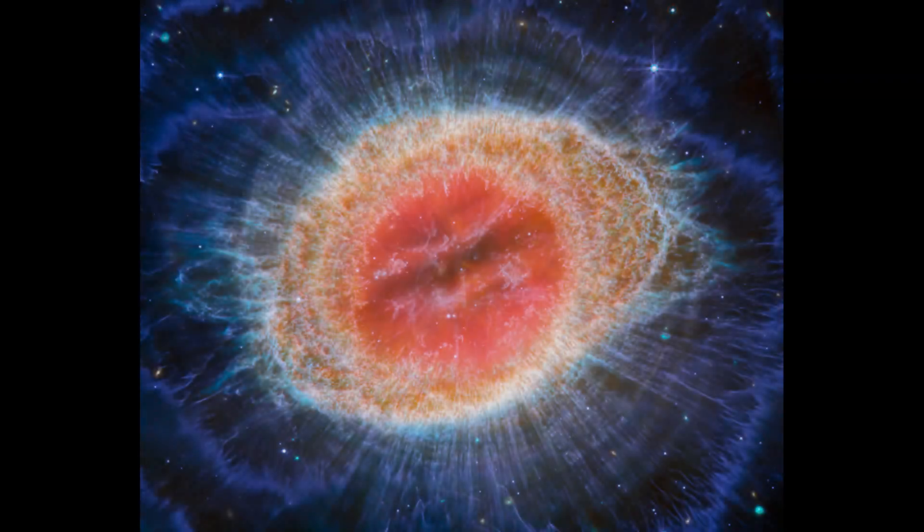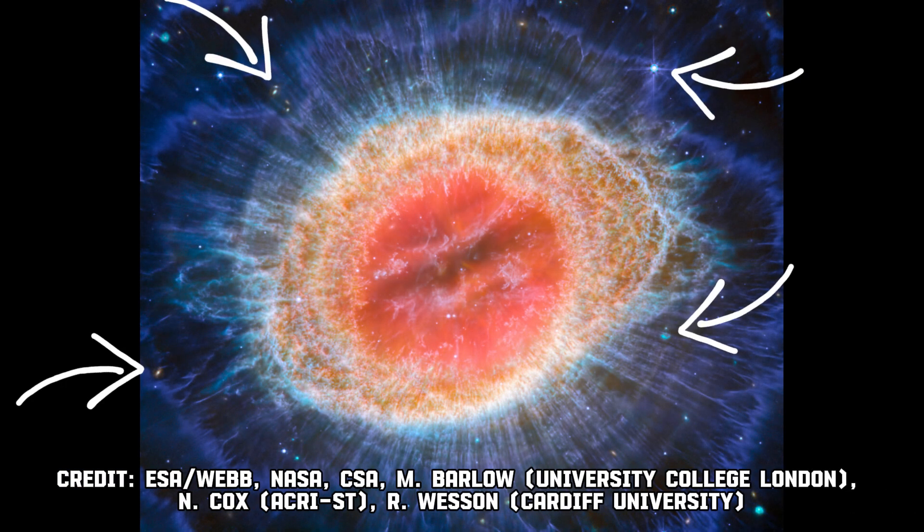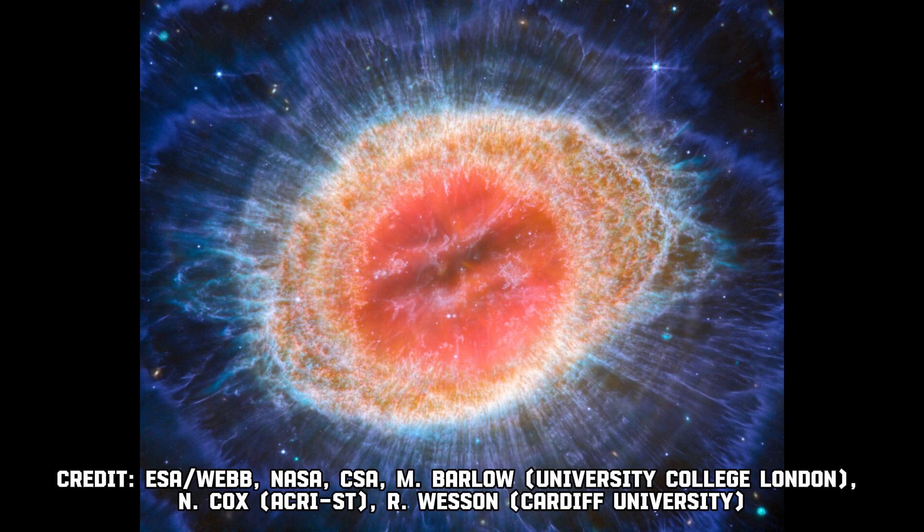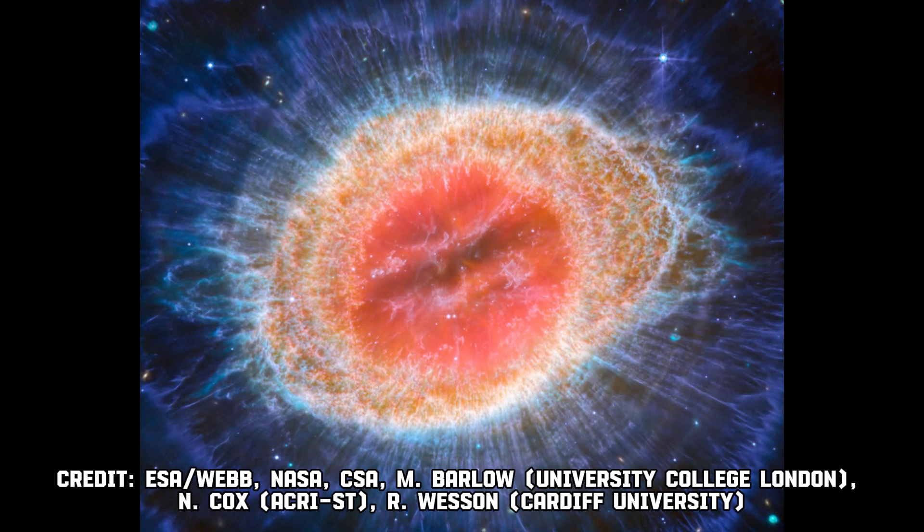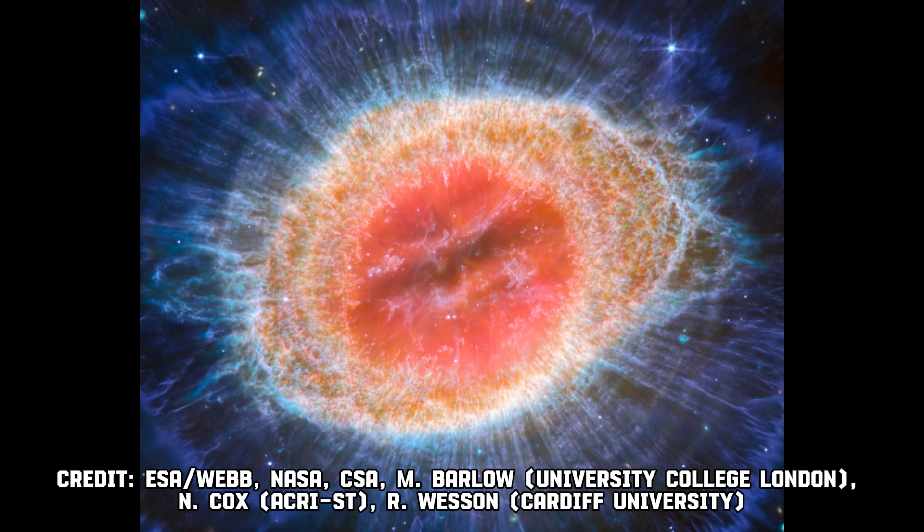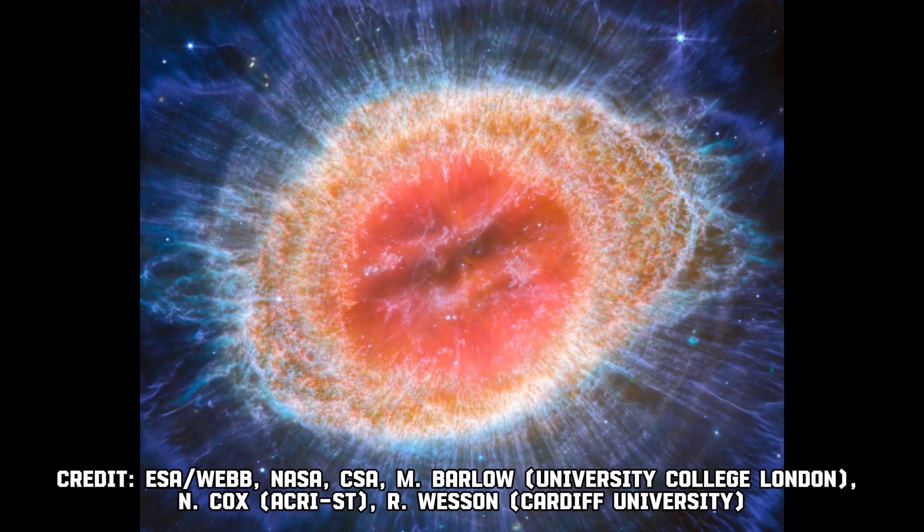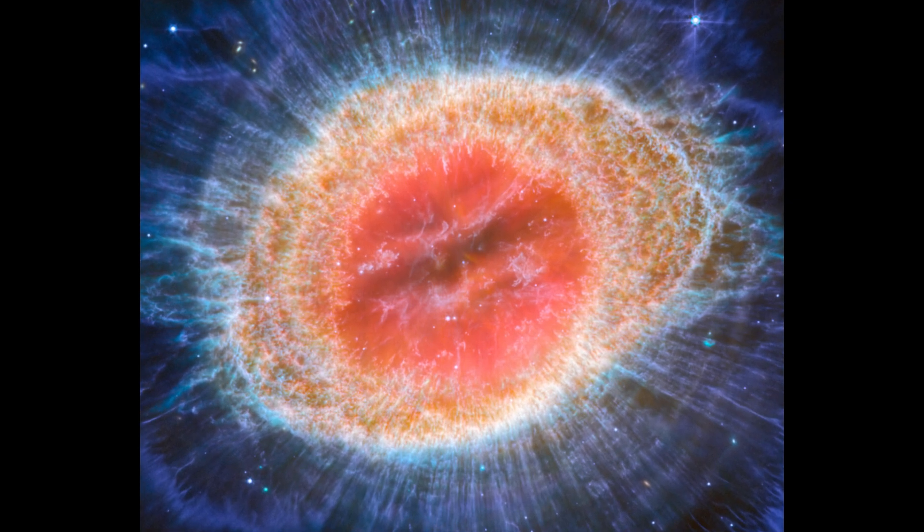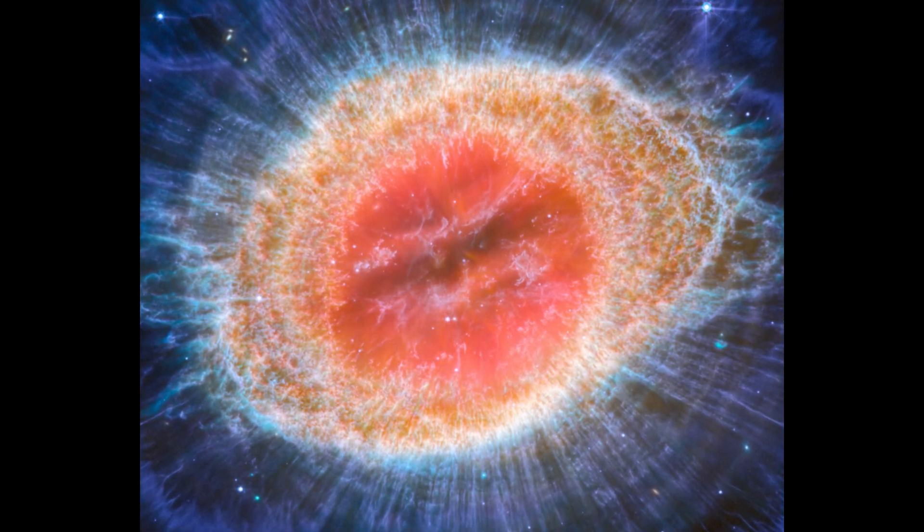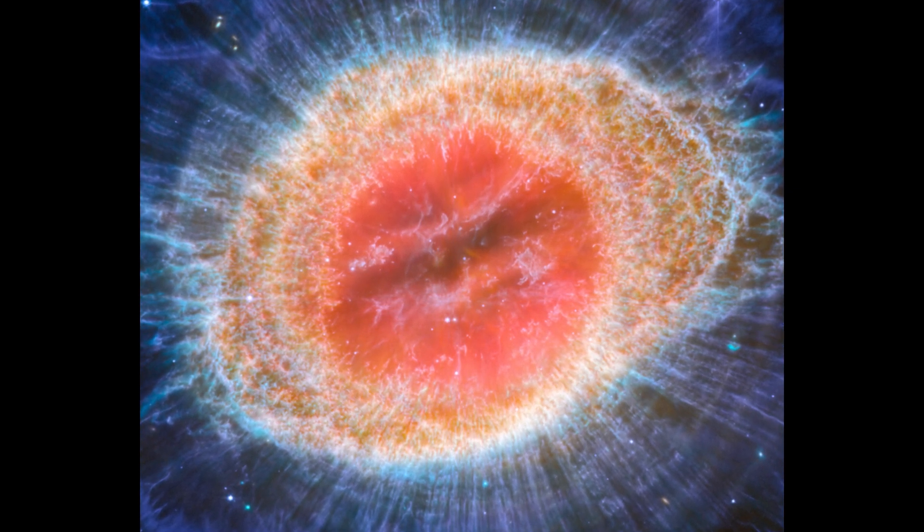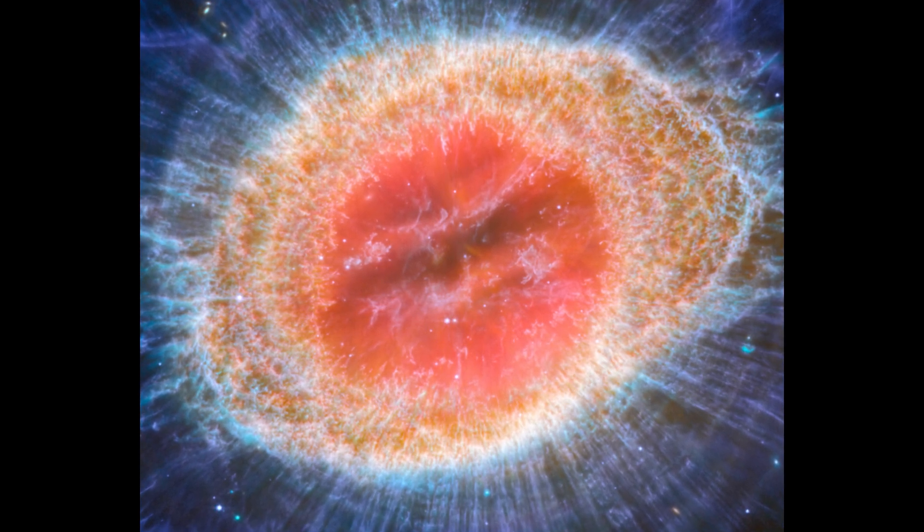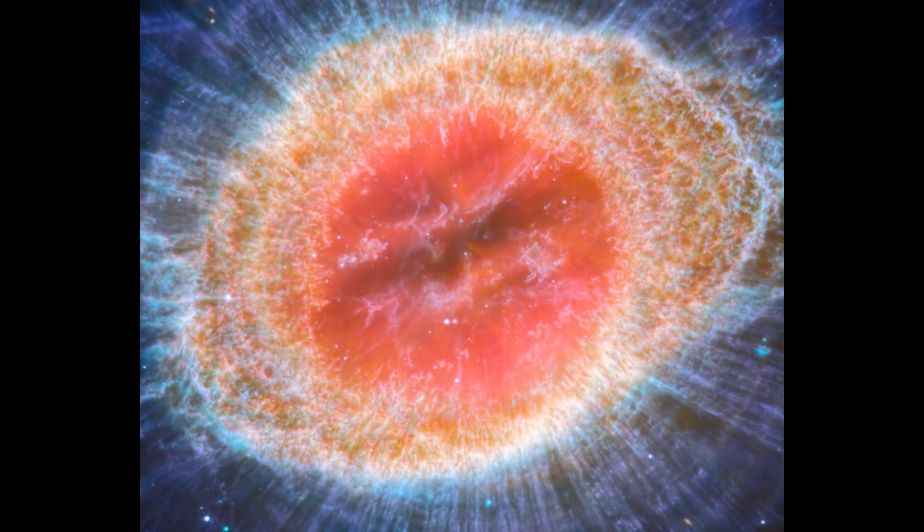This new image of the Ring Nebula from Webb's mid-infrared instrument reveals particular detail in the concentric features in the outer region of the nebula's ring. Roughly 10 concentric arcs are located just beyond the outer edge of the main ring.